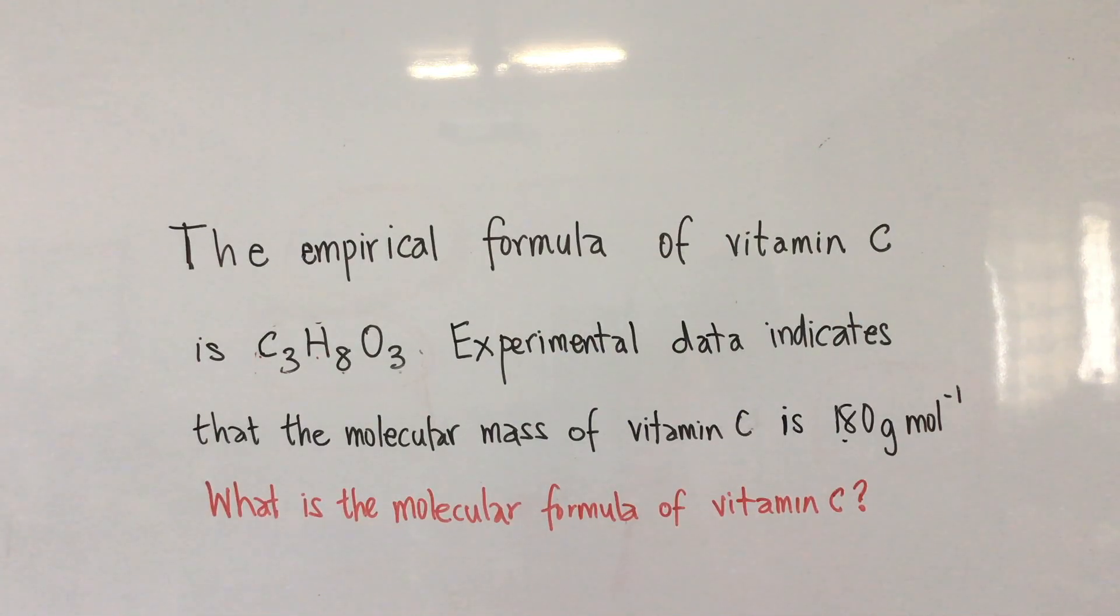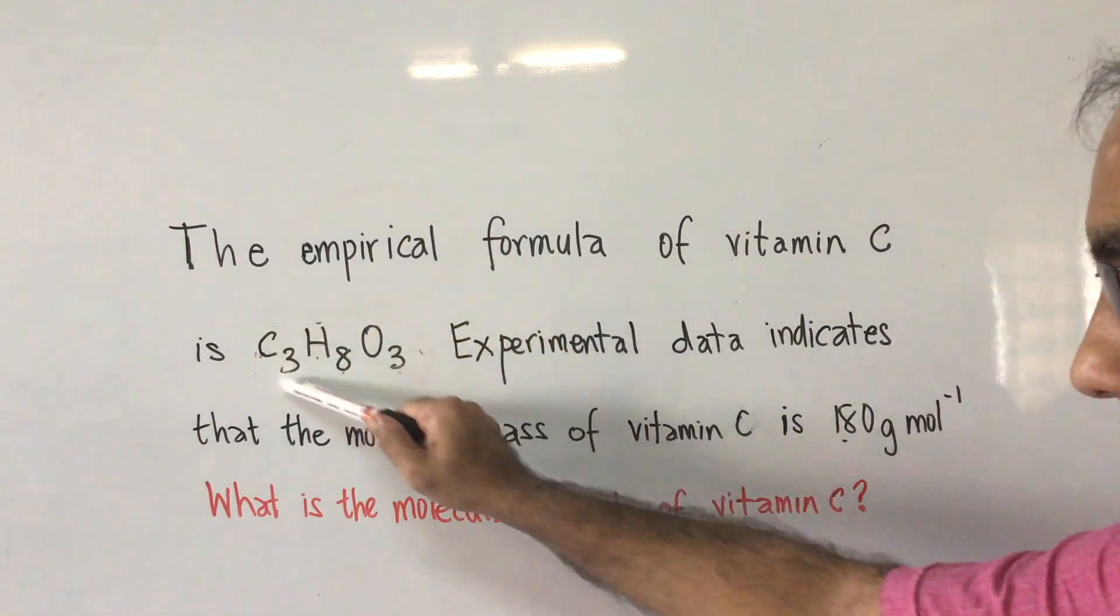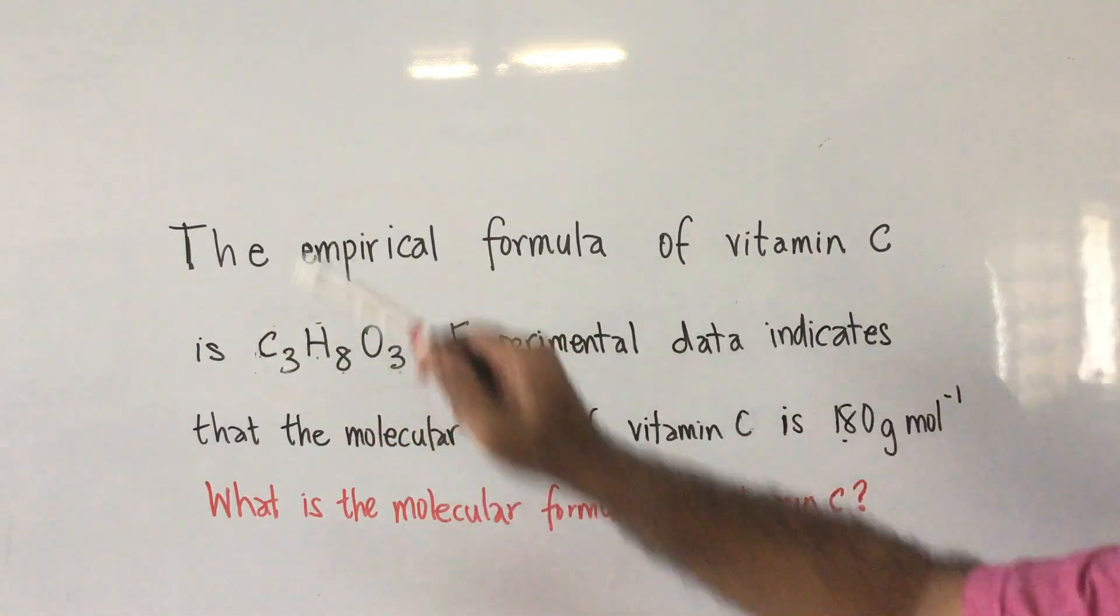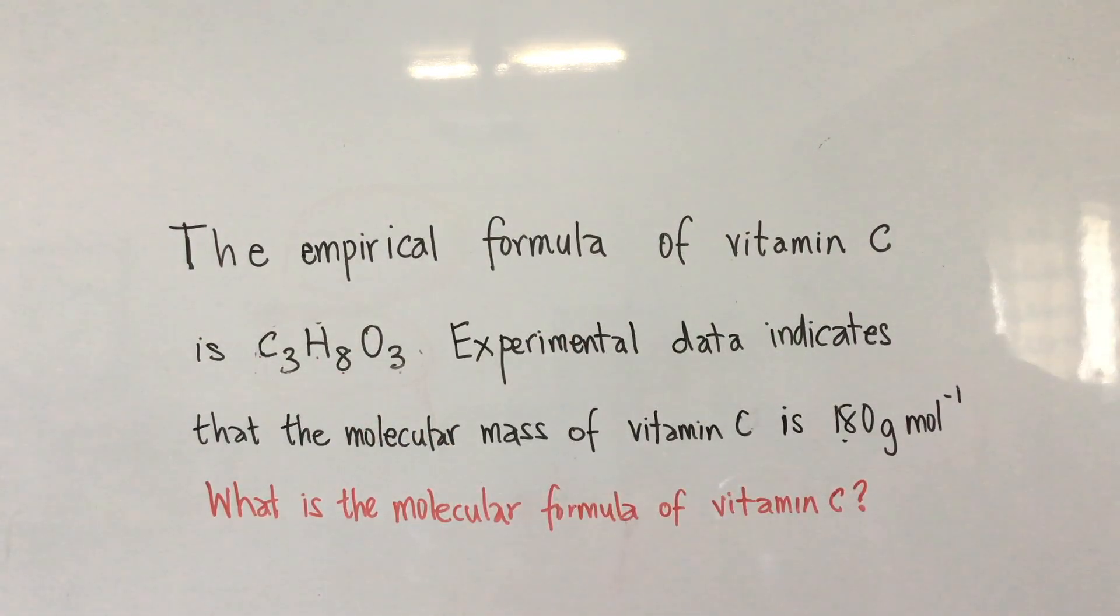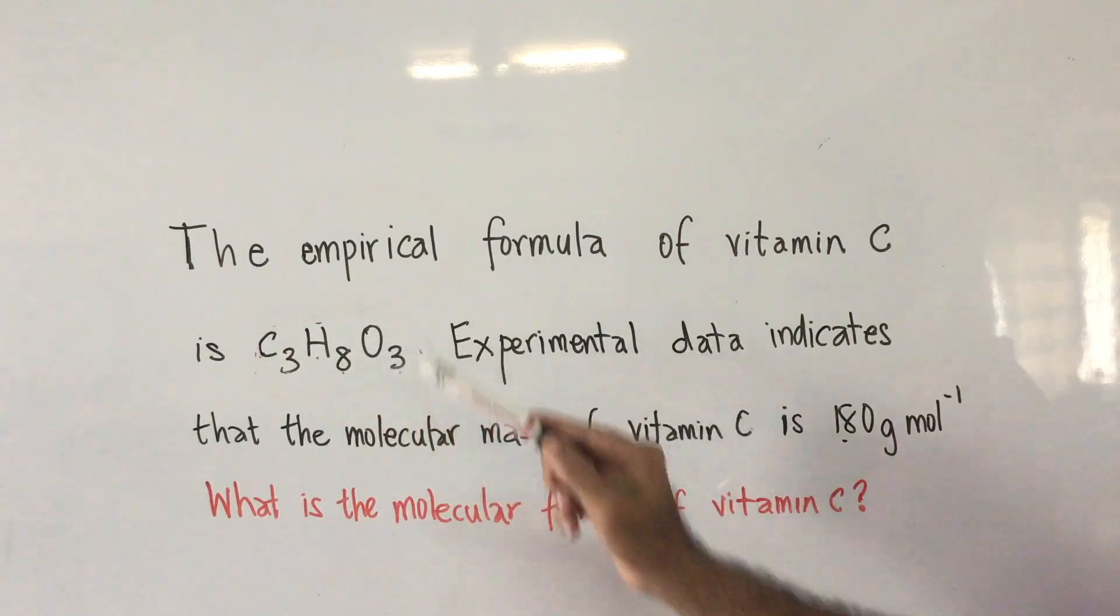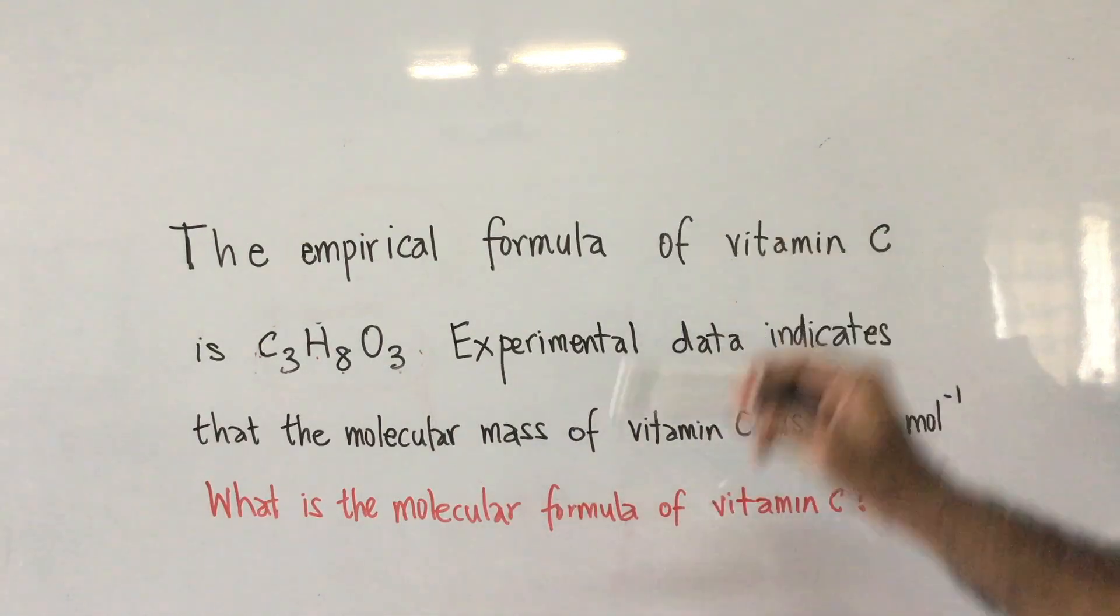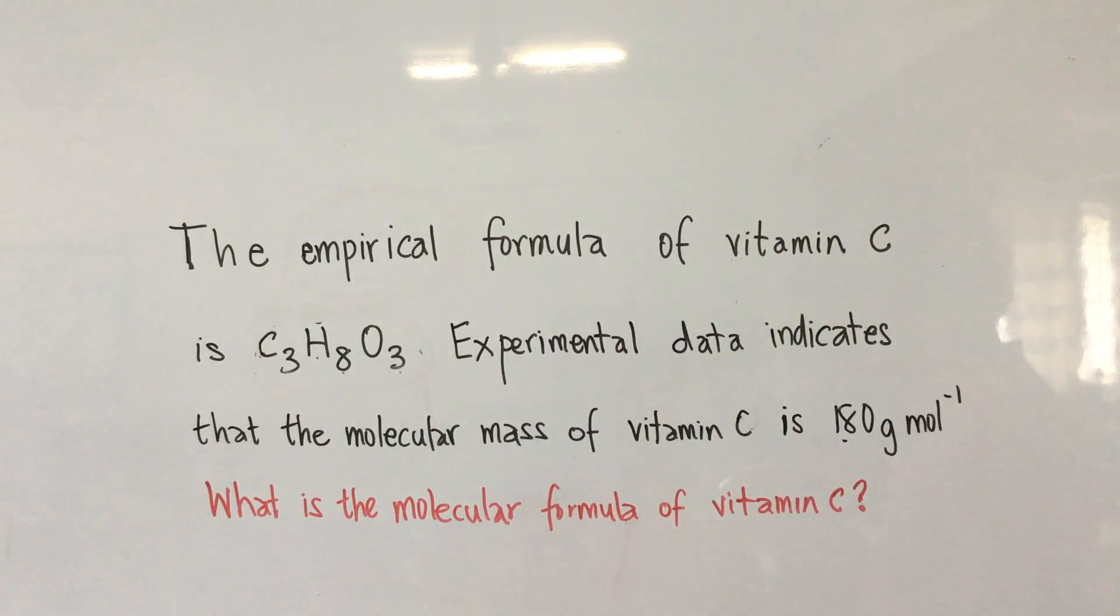To go about doing this question, you have to realize that this formula here is a reduced version of the actual formula. Based on some empirical or experimental evidence, we know that the relative amounts in moles of carbon to hydrogen to oxygen is 3 to 8 to 3, reduced to the simplest whole number ratio. That's what the empirical formula is.